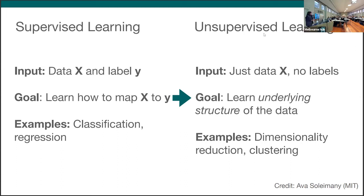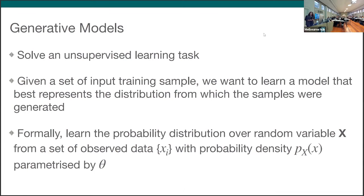There are many of them, very important to name: variational autoencoders, generative adversarial networks, and the ones that I will be speaking to you today about called normalizing flows. But before we go there, now that we have honed in on the unsupervised learning of deep learning, we want to hone in further and talk to you about generative models. So generative models solve an unsupervised learning task. What I mean by that is, given an input of a training sample, we want to learn a model that best represents the distribution from which these observed data were drawn. Formally, we want to learn the probability distribution over random variable X from a set of data that we've observed, that's characterized by probability density p of X parameterized by a parameter space theta.